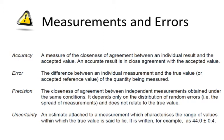Precision: The closeness of agreement between independent measurements obtained under the same conditions. It depends only on the distribution of random errors and is not related to the true value.